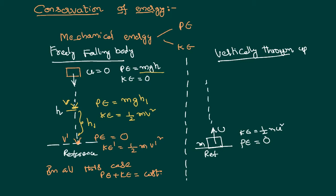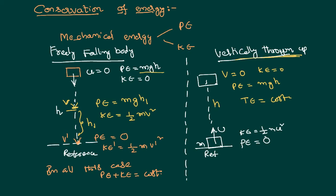Suppose it has reached a particular point — say, the maximum height. At that point, its velocity becomes zero, so its kinetic energy is equal to zero. But it has reached a height h, and therefore it will have a potential energy equal to mgh with reference to the reference point. The total energy is the same in both cases. Therefore, according to the law of conservation of energy, energy is neither created nor destroyed — it just converts from one format to another, and the total energy of a system always remains constant, provided there is no loss of energy in any other formats.